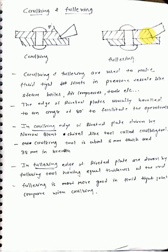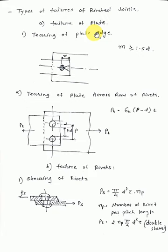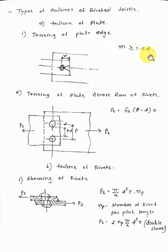These are the methods used for making a fluid-tight joint: caulking and fullering. Now, the different types of failure in a riveted joint. First is the failure of the plate — the tearing of the plate. The margin must be greater than 1.5D (diameter of the rivet); otherwise you can see a crack develop.